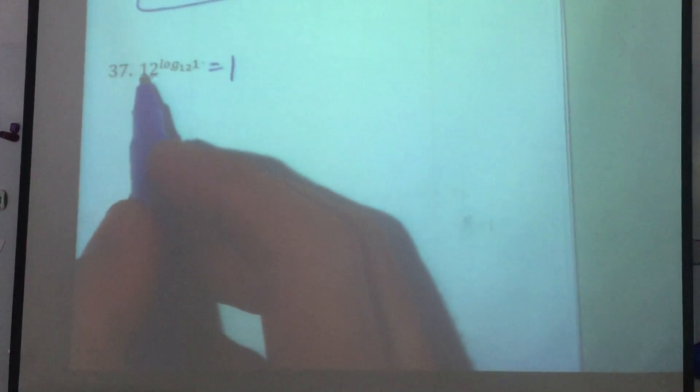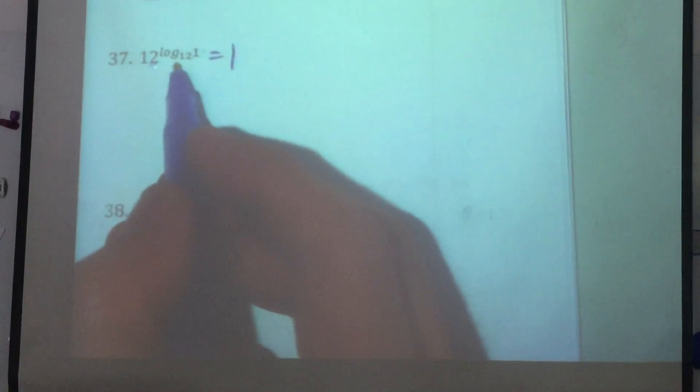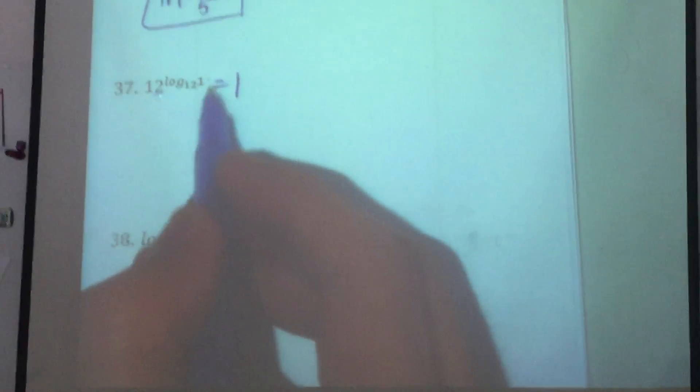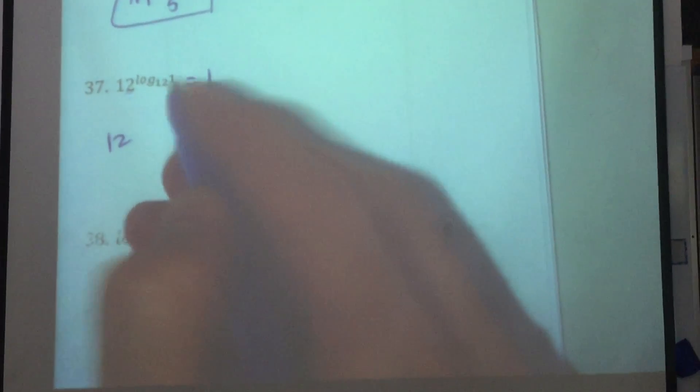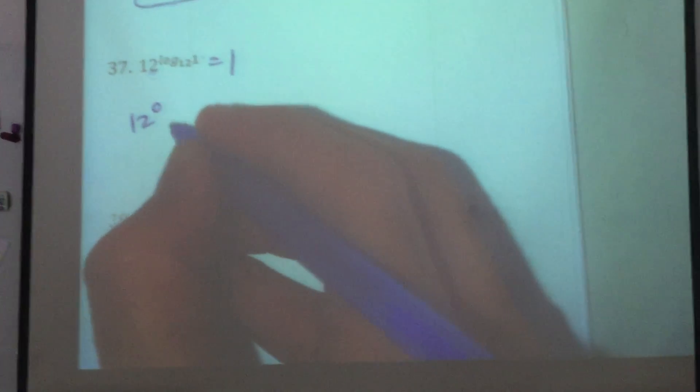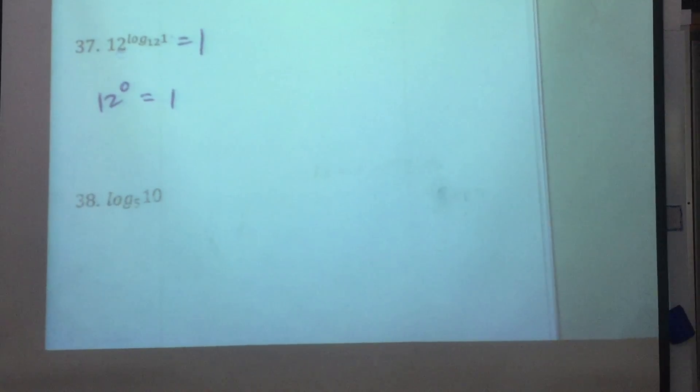Because this, the exponent raised to the power, to the log of a base 12, will give you just whatever the argument is. Another way you could solve it is to say, well, this log base 12 of 1, any log of 1 is always 0. So this is just 12 to the power of 0, which again is 1. So either way, you get 1.